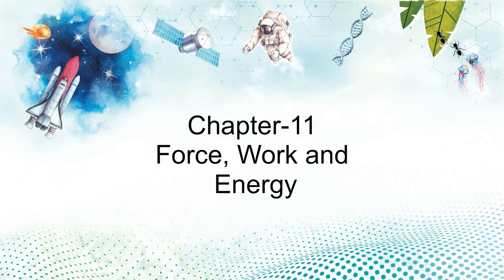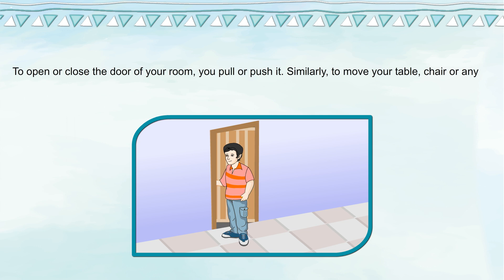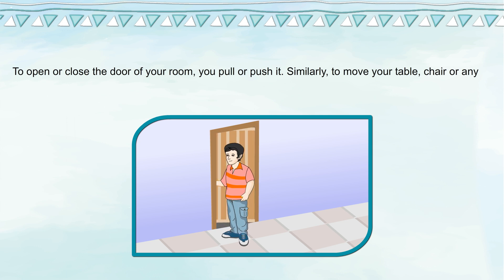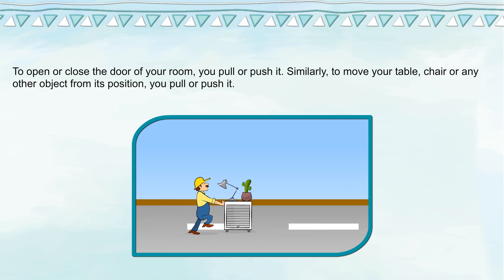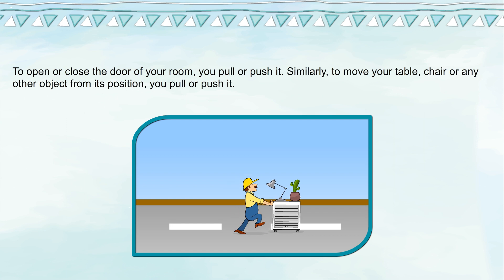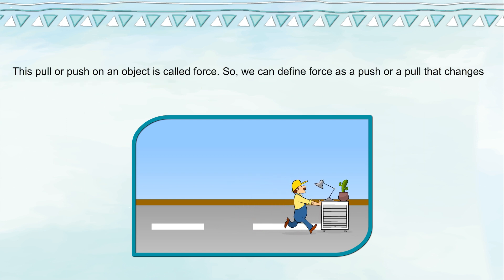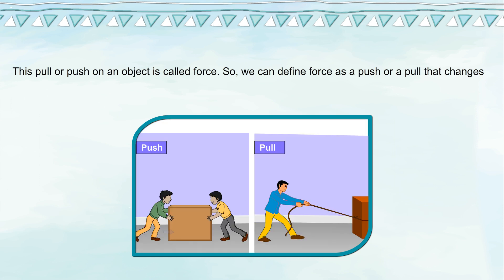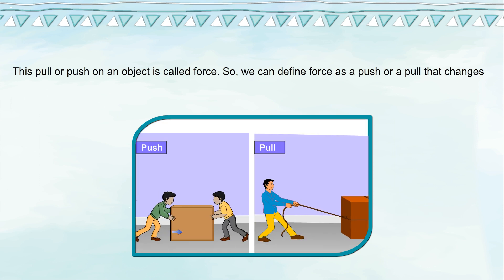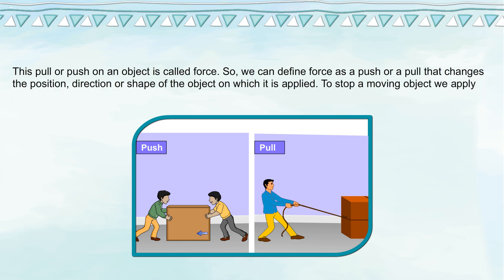Chapter 11: Force, Work and Energy. To open or close the door of your room, you pull or push it. Similarly, to move your table, chair or any other object from its position, you pull or push it. This pull or push on an object is called force. We can define force as a push or a pull that changes the position, direction or shape of the object on which it is applied.